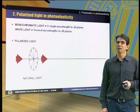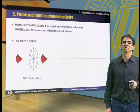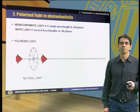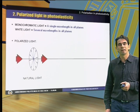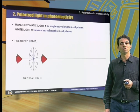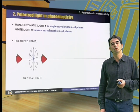If the light is monochromatic, all the waves will have the same wavelength in all planes. If, on the contrary, the light is white, a superposition of different wavelengths will occur in all planes.